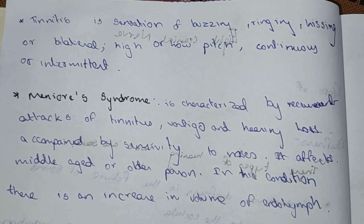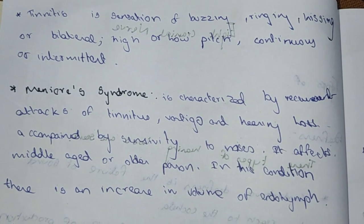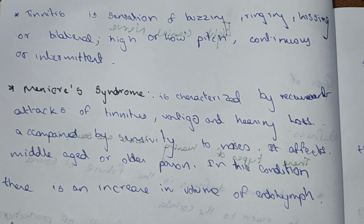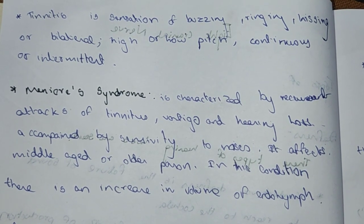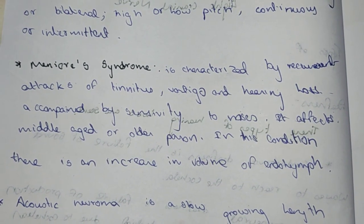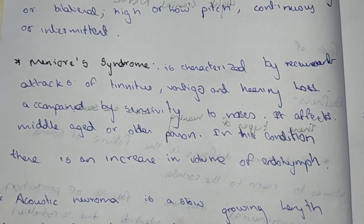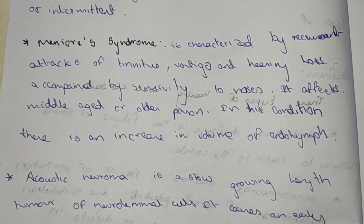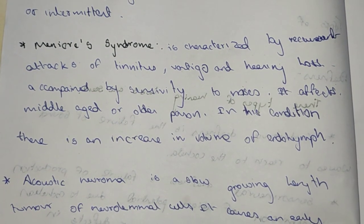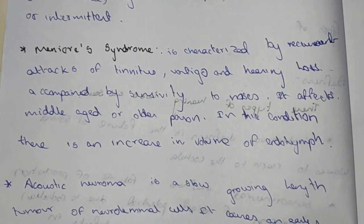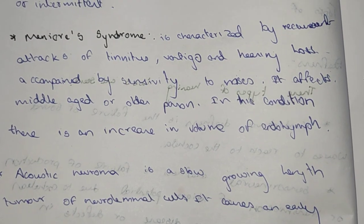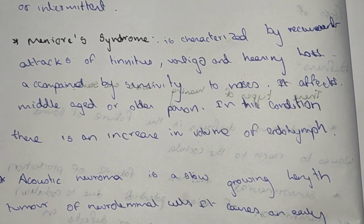Tinnitus is a sensation of buzzing or ringing sound, which may be high or low pitch, and can be continuous or intermittent. Meniere's syndrome is characterized by recurrent acute episodes of tinnitus, vertigo, hearing loss, and sensitivity — these four combined form this syndrome. It affects middle-aged and older persons, and there will be increased volume of endolymph.